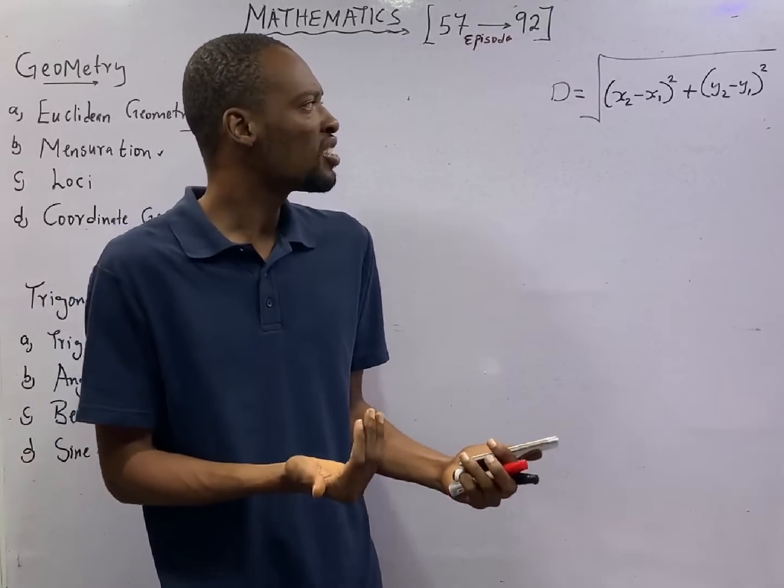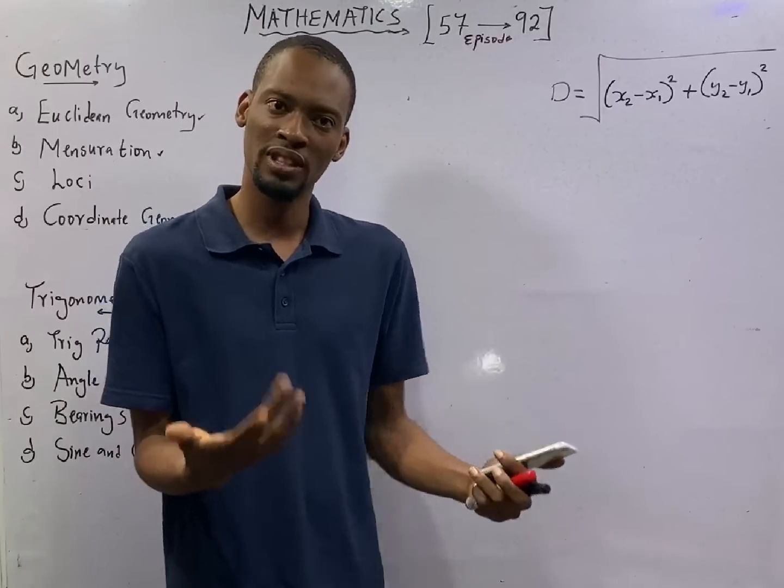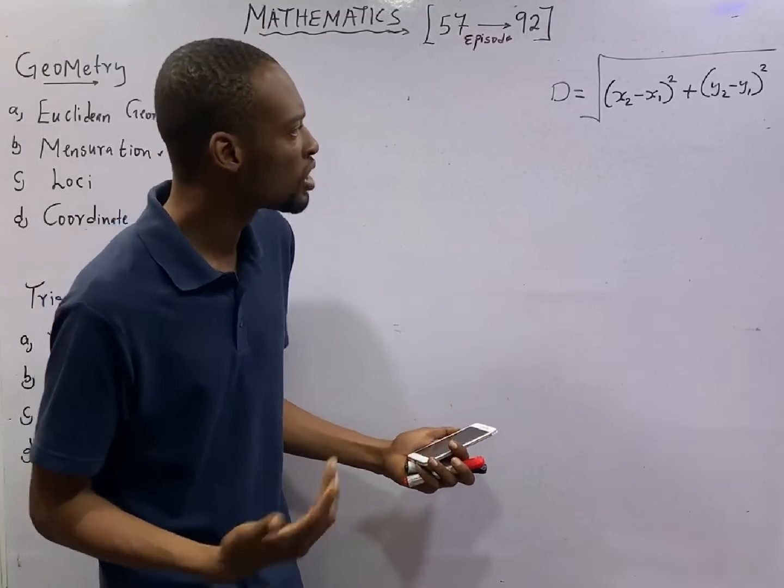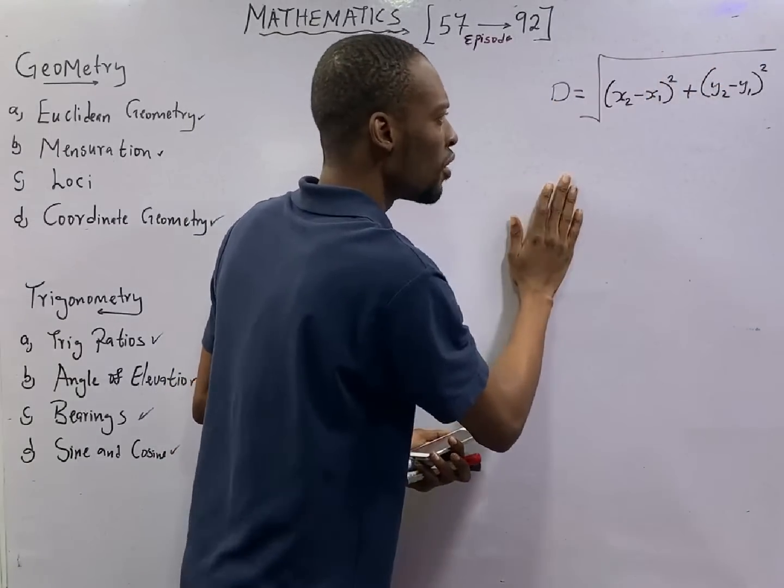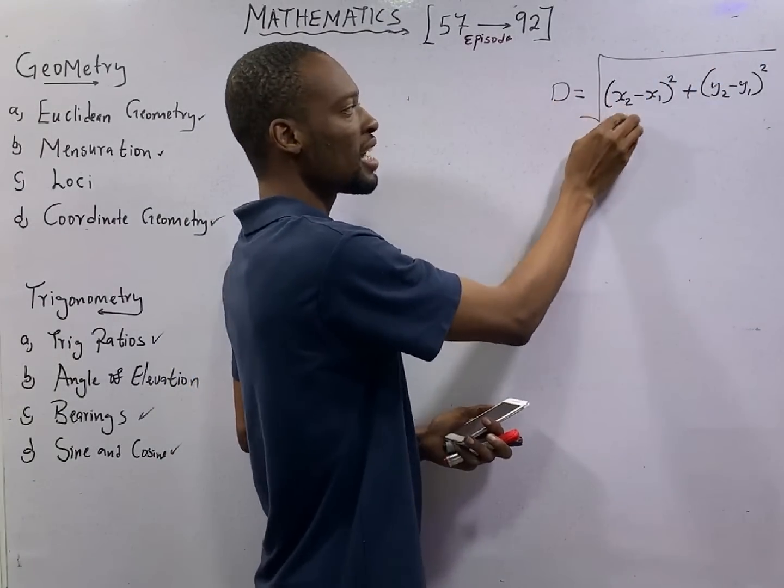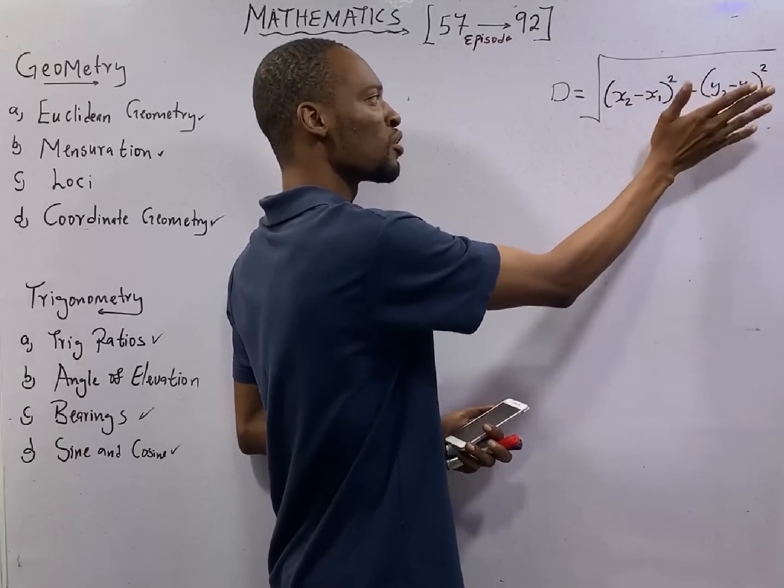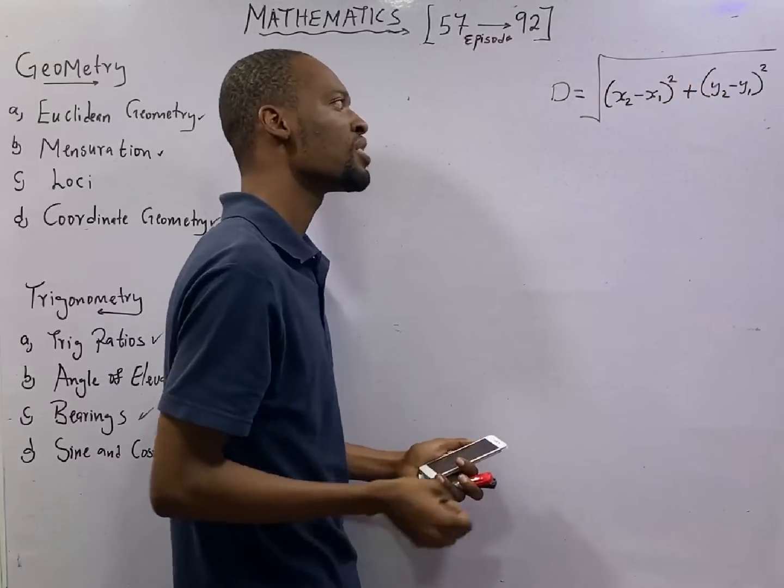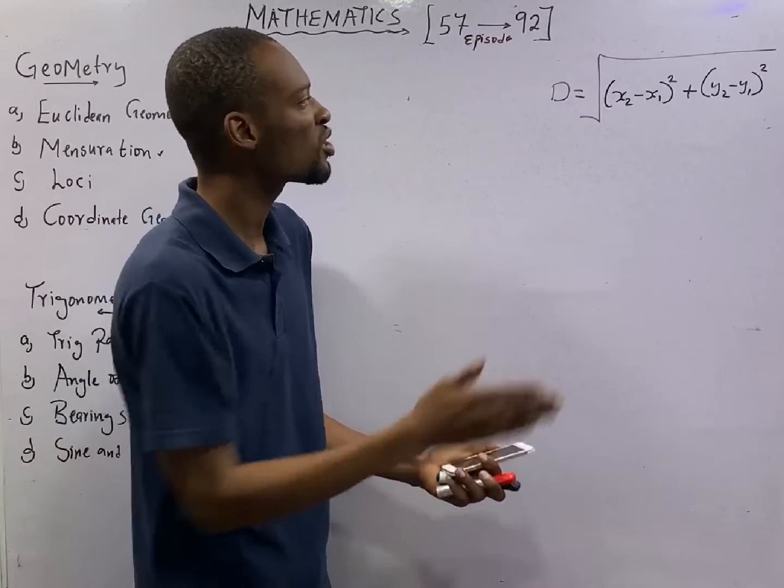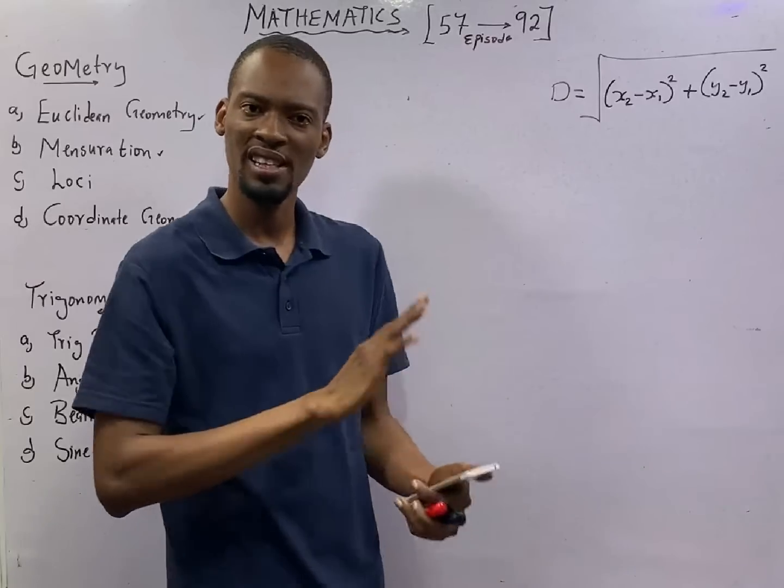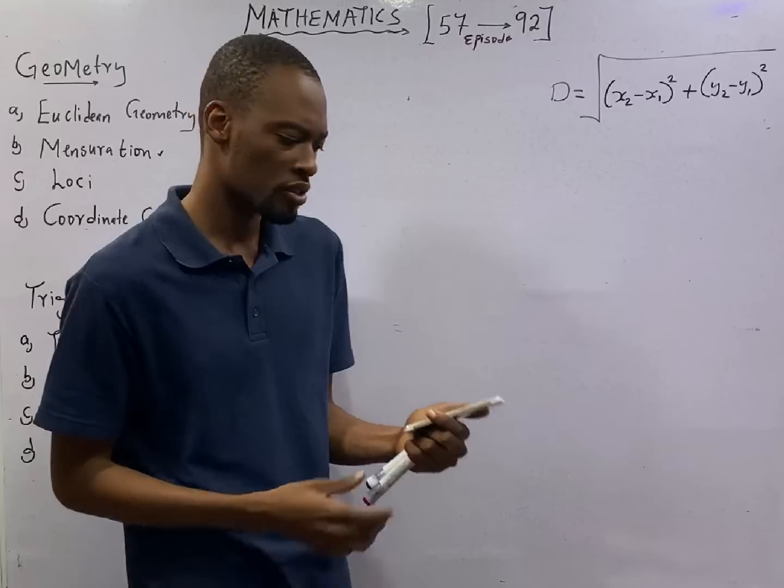If you are dealing with coordinates and you are asked to look for the distance between two points, you will simply say distance equals square root of (x2 minus x1) squared plus (y2 minus y1) squared. From the coordinates I gave you in the previous episode, you can just substitute the various values and you will get your distance. Life becomes very easy for us.